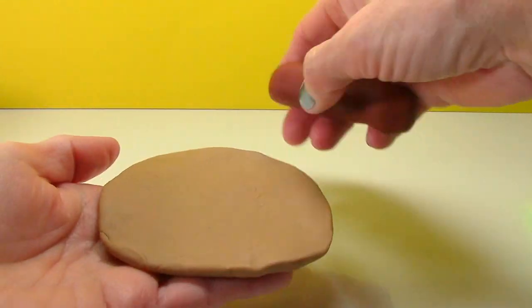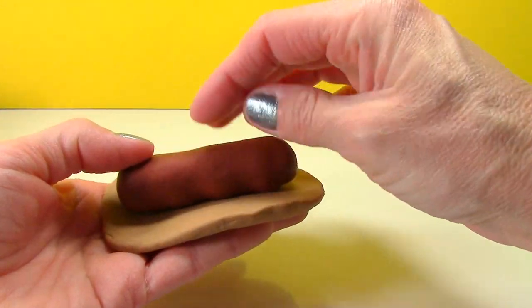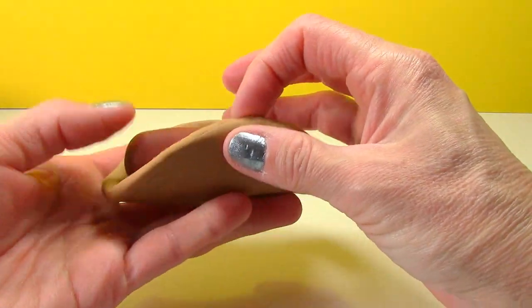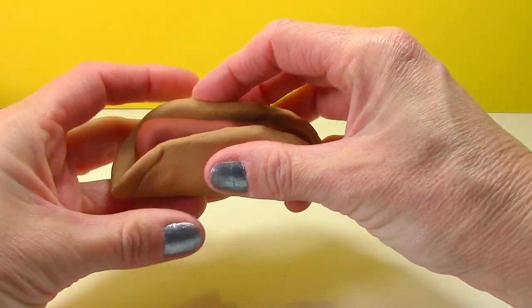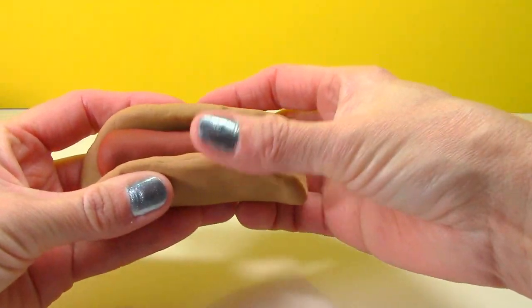And then we will take our light brown Play-Doh and press that against the other Play-Doh to make it stick.